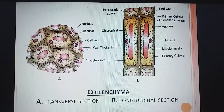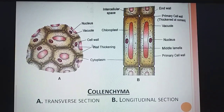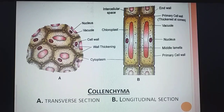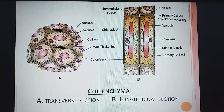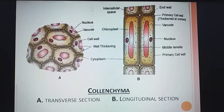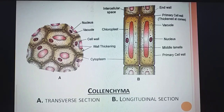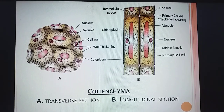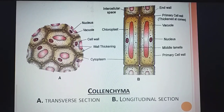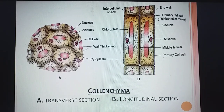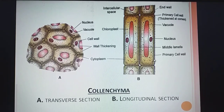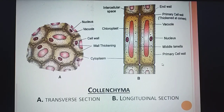This will be more clear through the diagram. Here you can see wall thickening — the corners are thickened, so intercellular space becomes very little, which was not the case in parenchyma. That is the basic difference between parenchyma and colenchyma. Diagram A is the transverse section and B is the longitudinal section of colenchyma.